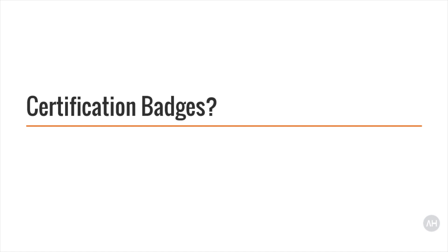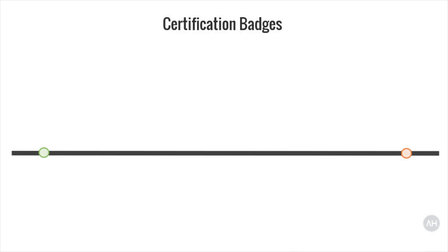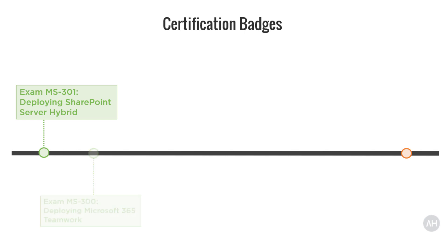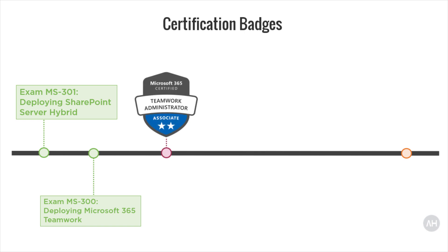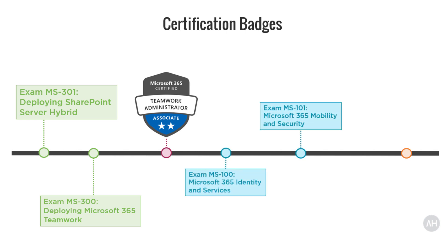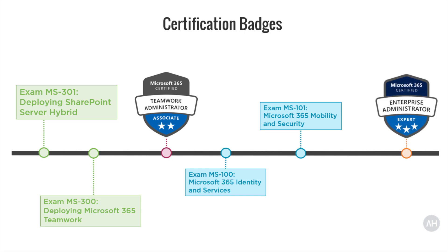During this journey you will get badges in this order. If your experience is with SharePoint and Microsoft Teams, and assuming you don't want to go with the transition exam, you will start by taking both the MS-301 and MS-300 exams. After completing both, you get the Teamwork Administrator Associate badge. After that you need to pass both MS-100 and MS-101. So after passing four exams in total, you get your Microsoft 365 Enterprise Administrator Expert badge.